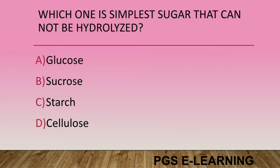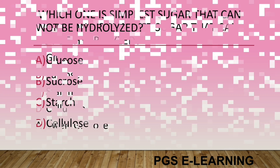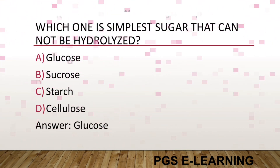Which one is the simplest sugar that cannot be hydrolyzed? Option A, glucose. Option B, sucrose. Option C, starch. Option D, cellulose. Correct answer is glucose.